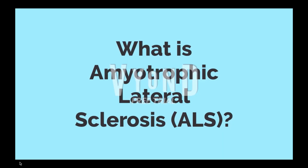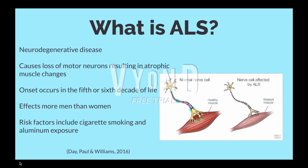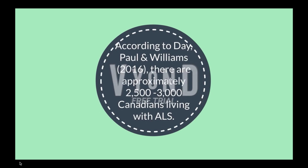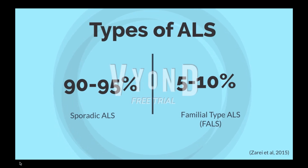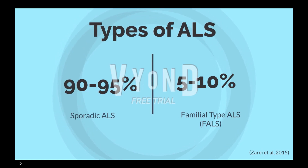What is amyotrophic lateral sclerosis? Amyotrophic lateral sclerosis, or ALS for short, is a neurodegenerative disease that causes loss of motor neurons resulting in atrophic muscle changes. Onset occurs during the fifth or sixth decade of life and affects more men than women. Risk factors include smoking and aluminum. There are approximately 2,500 to 3,000 Canadians living with ALS. There are two types of ALS: sporadic or familial type. Sporadic ALS occurs in 90 to 95% of cases with no identifiable cause. In familial type ALS, there is a genetic dominant inheritance factor, occurring in 5 to 10% of cases.